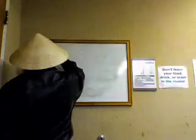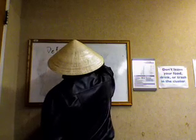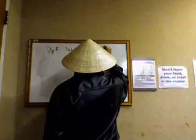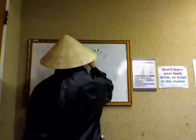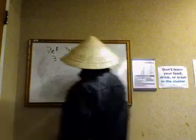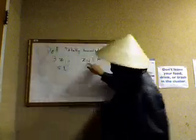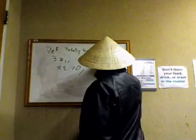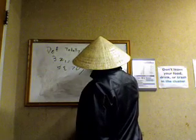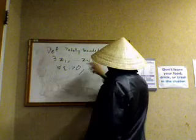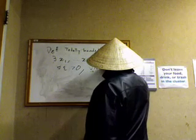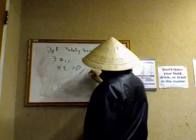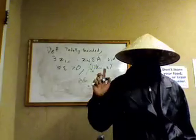There's another definition: totally bounded. A totally bounded set means there exist x₁, x₂, ..., xₙ in the set A — a finite number of points — such that for any epsilon greater than zero, you can find a union from i equals one to n of distance balls of radius epsilon centered at xᵢ, and A is contained in the union of these balls. Very related to compact.